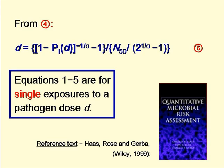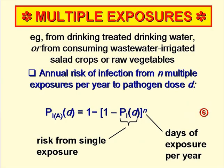The equations we've used so far – equations 1 to 5 – are all for single exposures to a pathogen dose D. However, in real life we are often subjected to multiple exposures. We drink drinking water every day, and we might eat wastewater-irrigated foods several times a week, so we need to determine the annual risk of infection from N exposures per year to a pathogen dose D, and this is given by equation 6 on the slide. This says that the annual risk of infection, PIAD, is given by 1 minus (1 minus PID) to the power N.